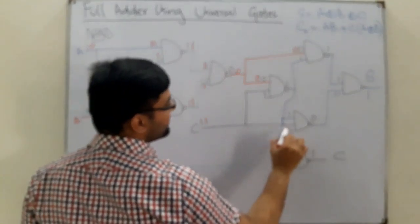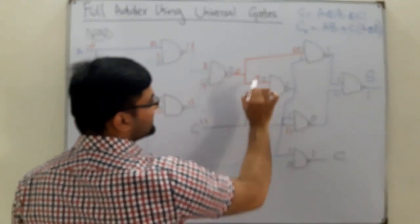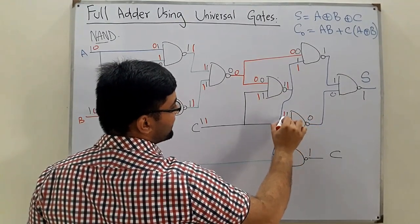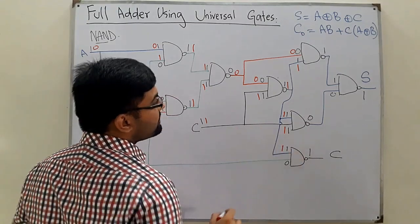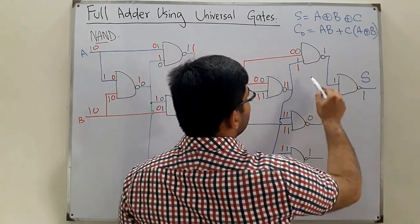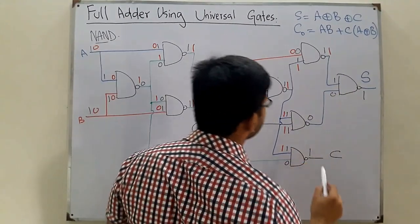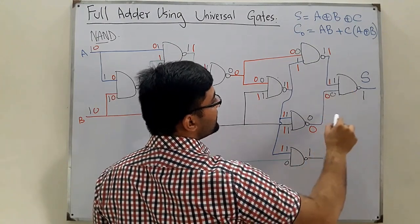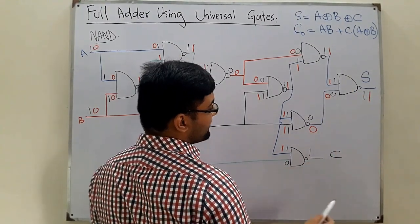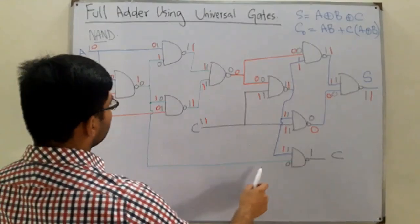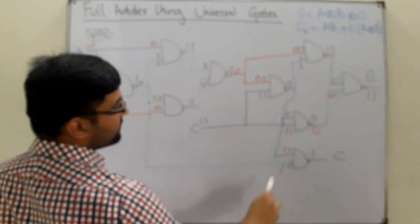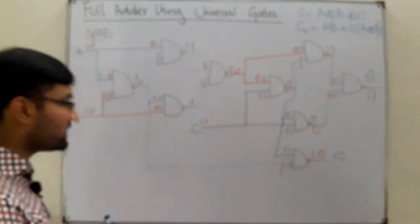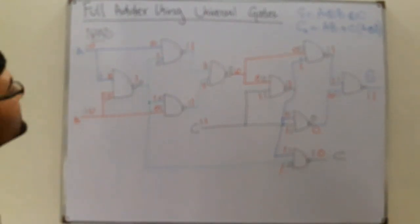We have 0 here and 0 here. C=1 comes in, so 0 NAND 1 gives 1. We have 1 here and 1 here. Then 0 NAND 1 gives 1. Finally, 1 NAND 1 gives 0 — so we have 0 for carry, and 1 NAND 0 gives 1 for the sum. Carry=0 and sum=1, which is absolutely correct.